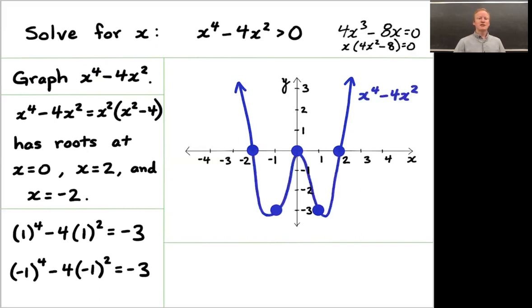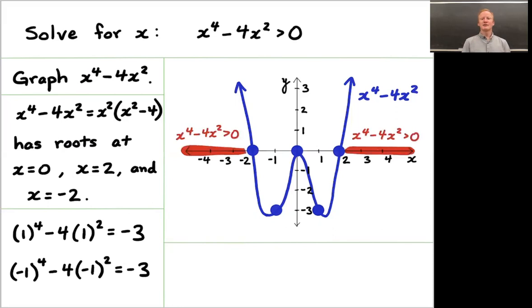That means 1 minus 3 and minus 1 minus 3 are both points of your graph. From here, we can sketch in any reasonable looking thing in the middle for the graph of x to the 4th minus 4x squared. Looking at this graph, we are trying to figure out when x to the 4th minus 4x squared is greater than 0. It's greater than 0 when the graph is above the x-axis, and that happens to the left of minus 2 and to the right of 2. That is, x to the 4th minus 4x squared is greater than 0 exactly when either x is less than negative 2 or x is greater than 2.